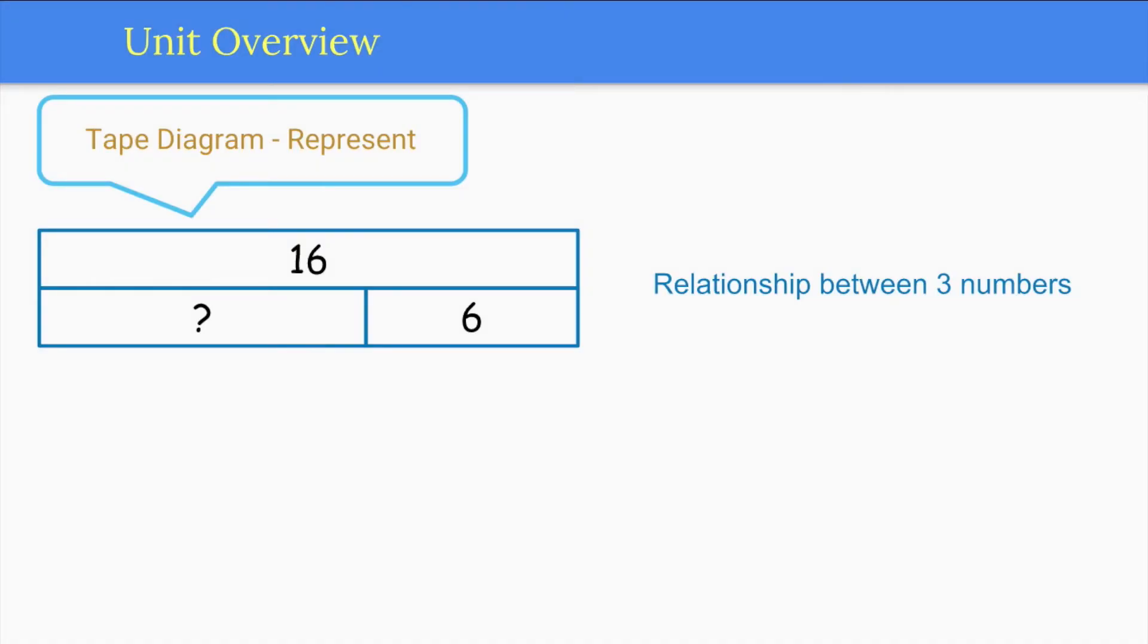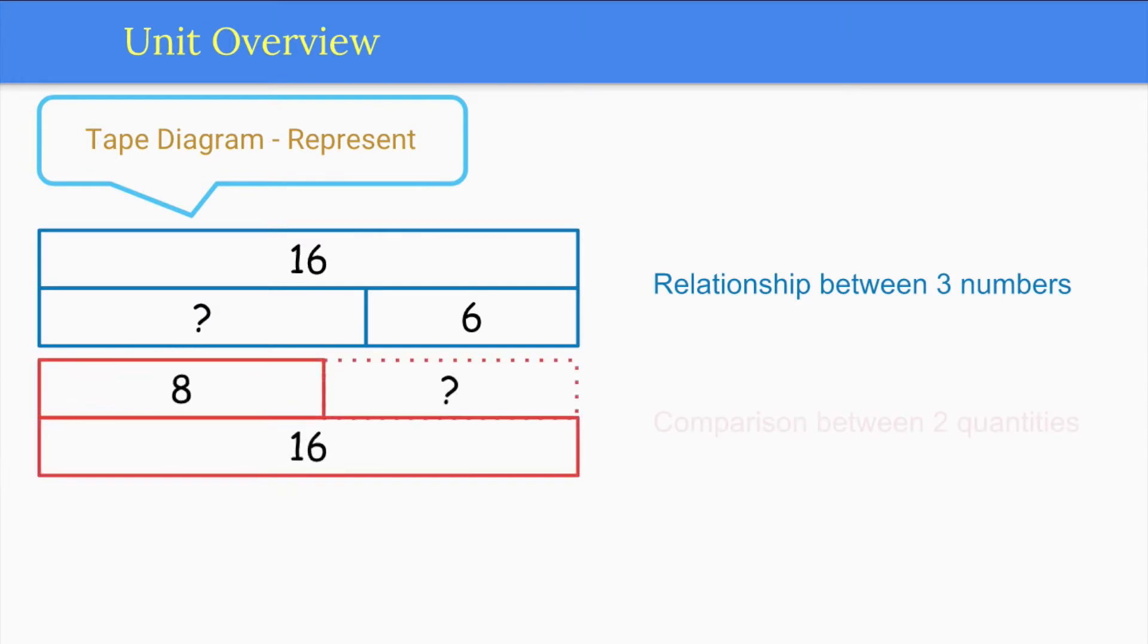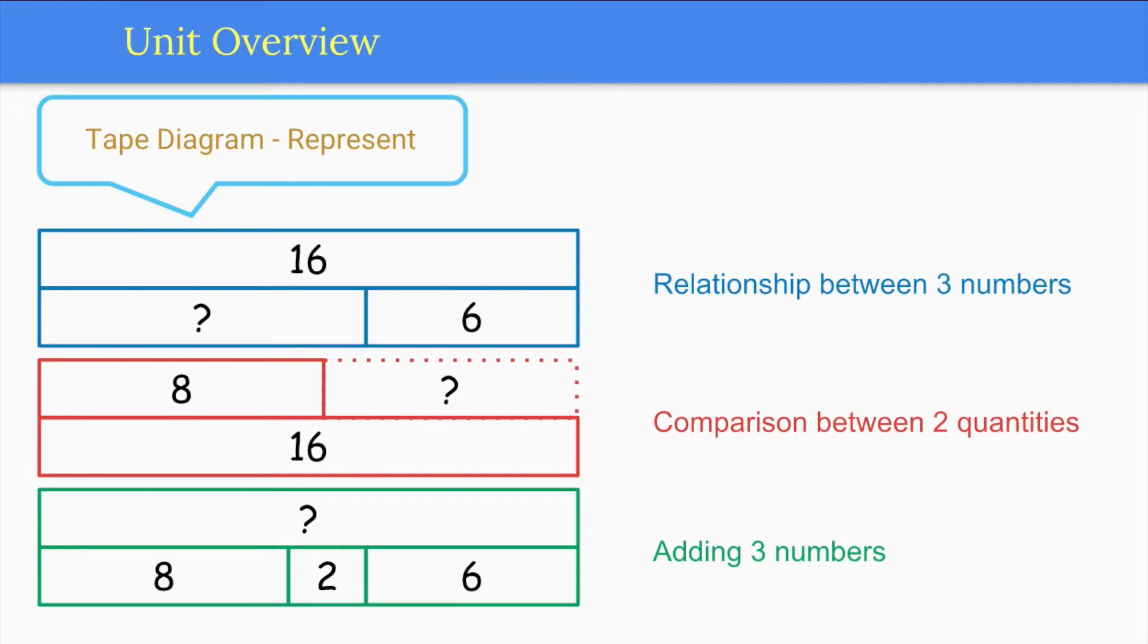One example of core math developed in this unit is the tape diagram. Students have used tape diagrams to graphically show the relationship between three numbers. Students will expand their understanding to use tape diagrams with compare problems and with three addends. Even if a tape diagram is not called out specifically in a lesson, feel free to suggest its use to your students. They can really help students decipher a word problem.